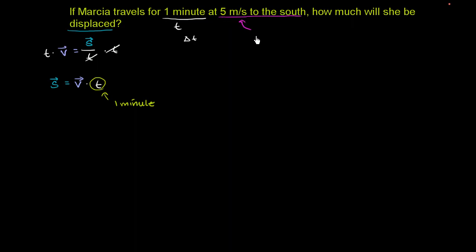At 5 meters per second to the south, this right over here is the velocity. They give us the magnitude which is 5 meters per second, or you could say that's the speed, and they also give us the direction to the south. So if we want displacement, that's just going to be equal to 5 meters per second to the south times 1 minute.